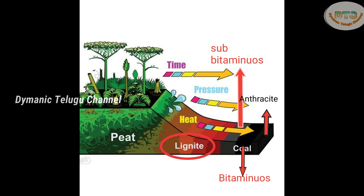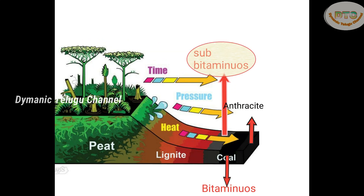The third stage is sub-bituminous coal. It is also called black lignite. The color is dark brown and black. The steam produces a drip. The fourth stage is the bituminous material.